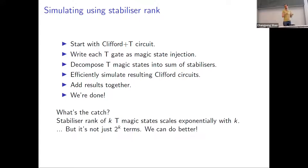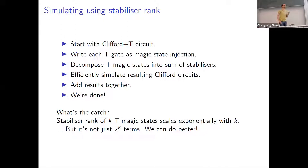What's the catch? The stabilizer rank is the minimal number of terms needed to write magic states in terms of stabilizer states. If we have k magic states, this scales exponentially with k, so we might need to sum exponentially many terms. The crucial bit is that it's not just 2^k terms — we can actually do better. So it's still exponential, but a better exponential.